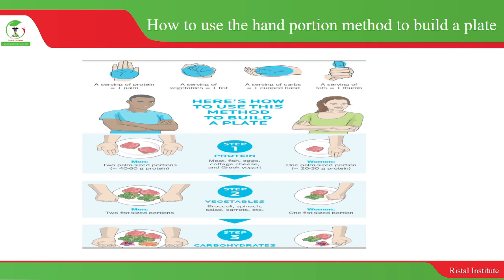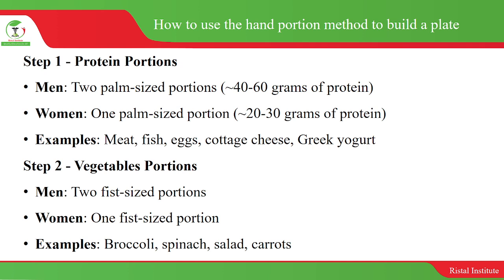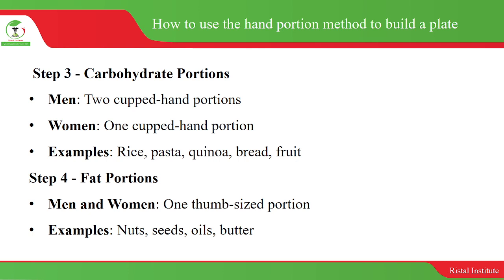For example, for protein portions: men need two palm-size portions, which contributes 40 to 60 grams of protein, and women need only one palm-size portion, contributing 20 to 30 grams of protein. Vegetable portions: men need two fist-size portions and women need one fist-size portion. Carbohydrate portions: men need two cupped hand portions and women need one cupped hand portion. For fat portions, men and women need the same — one thumb-size portion.